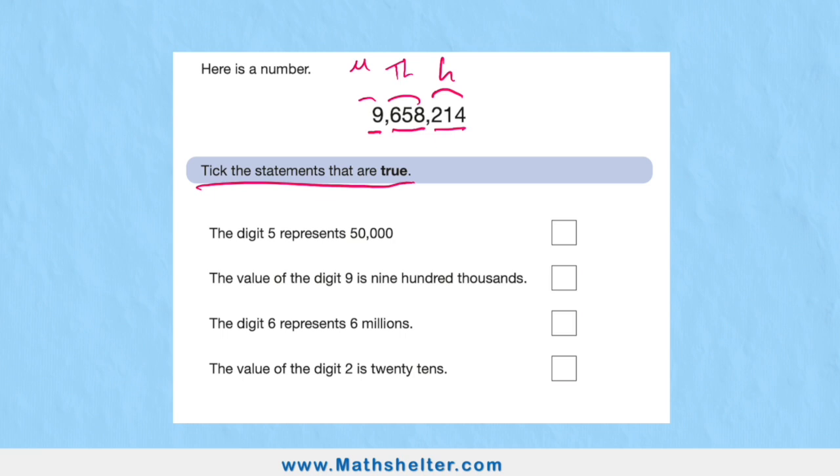The digit five represents fifty thousand. Well, where are we? We're in this column just here. Let's begin by putting column titles on: ones, tens, hundreds, thousands, ten thousands, hundred thousands, and then millions.